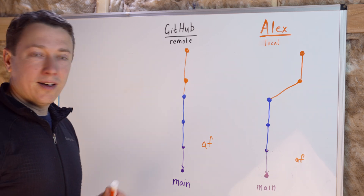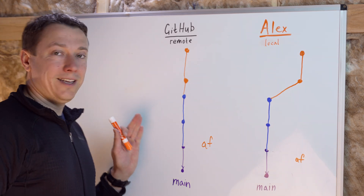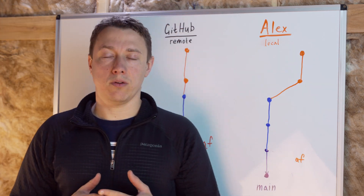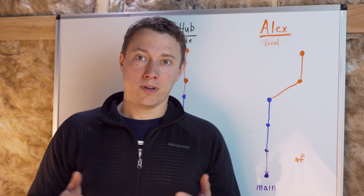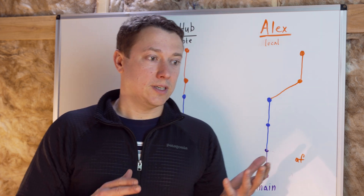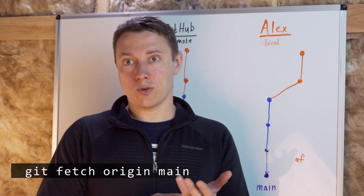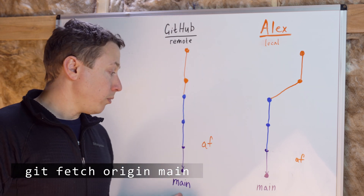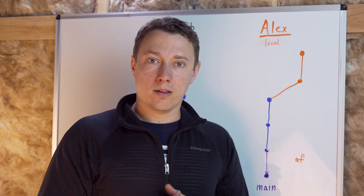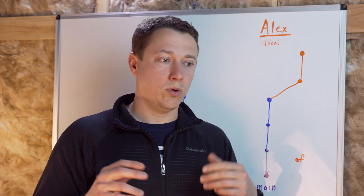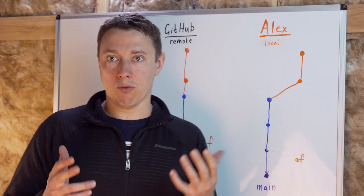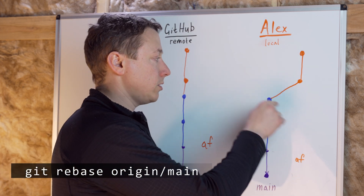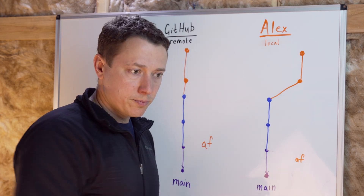That makes for a nice neat looking history in git. Before we try this git workflow in the terminal, let's summarize. First you want to run git fetch origin main to download the latest commits from the remote main branch into your local system. Then you want to run git rebase origin/main to rebase your feature branch on top of the latest commit in the main branch.